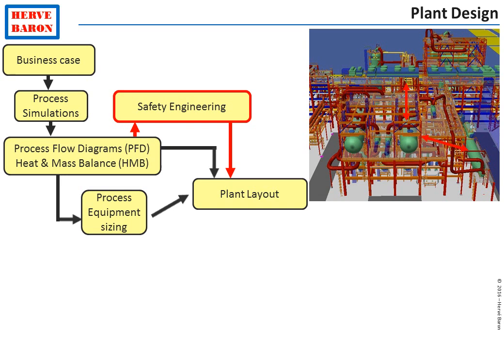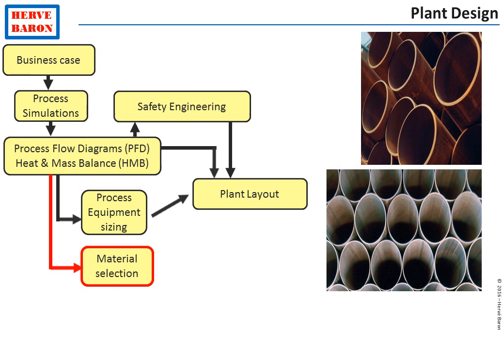Safety engineering comes in at this stage. They identify the hazardous materials and prescribe safety distances between hazardous equipment. The heat and mass balance also allows to identify all types of fluids and their conditions in the various pieces of equipment and pipes of the plant. This in turn allows to select the proper materials of construction. Stainless steel will be selected for highly corrosive services, whereas ordinary carbon steel will be selected when corrosion is not an issue.